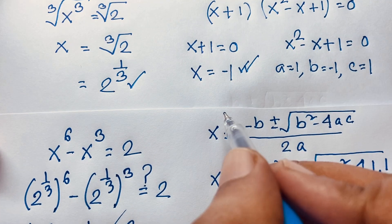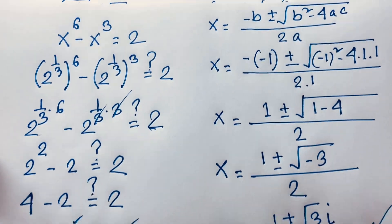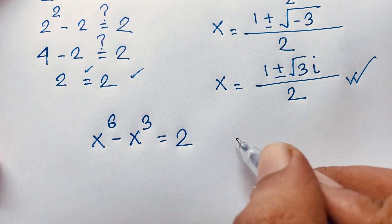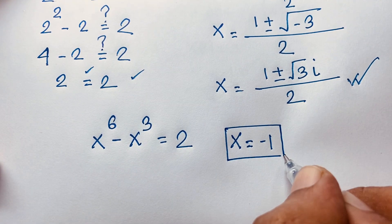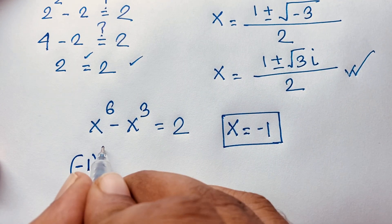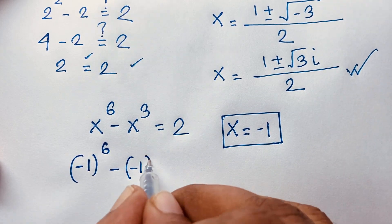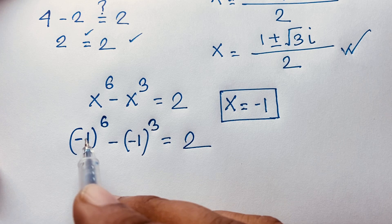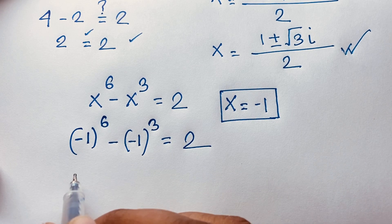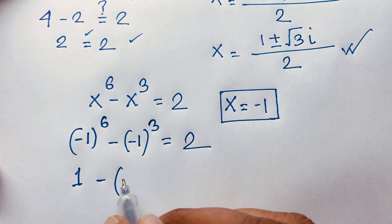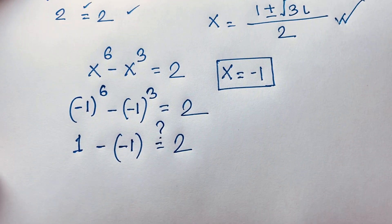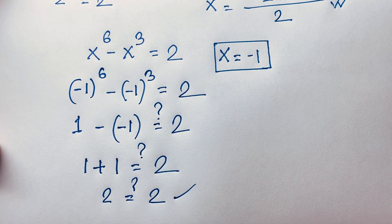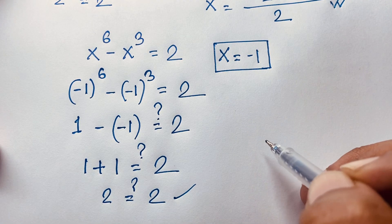Now let's verify x equals negative 1. Substituting into x to the power 6 minus x to the power 3, we get negative 1 to the power 6 minus negative 1 to the power 3 equal to 2. Since the power 6 is even, negative 1 to the power 6 is 1. Negative 1 to the power 3 is minus 1. So 1 minus negative 1 gives 1 plus 1, which is 2. Left-hand side equals right-hand side. So x equals negative 1 is also a valid answer.